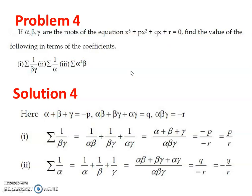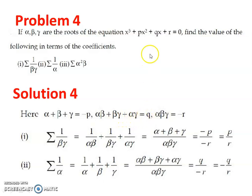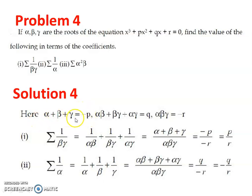According to the previous lecture, we know that the sum of roots alpha plus beta plus gamma equals minus p, which is of the form minus b/a where b = p and a = 1. The sum of products of two roots, alpha·beta + beta·gamma + gamma·alpha, equals q (which is c/a). And the product of roots alpha·beta·gamma equals minus r.